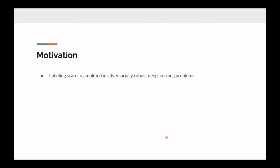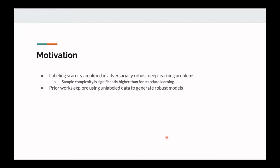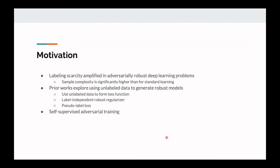For the motivation for this work, the idea of labeling scarcity being a problem is amplified in adversarially robust deep learning because the sample complexity is significantly higher than for standard learning. Adversarial robustness is harder generally than simple classification problems. When we don't have labels, it can be even more challenging to produce adversarially robust models. Prior works cover using unlabeled data to form the loss function, label-independent robust regularizers, and pseudo-label loss.